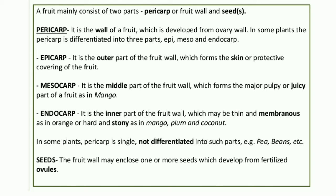The fruit wall may enclose one or many seeds, which develop from fertilized ovules. Remember: ovary develops into fruit, and ovules present in the ovary form the seed — ovary into fruit, ovules into seed. So the fruit contains one or many seeds.